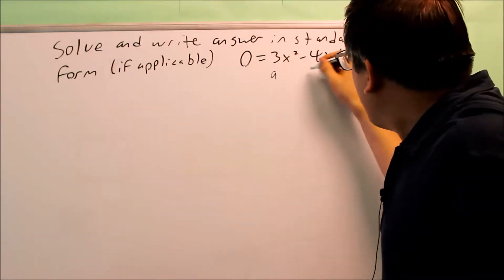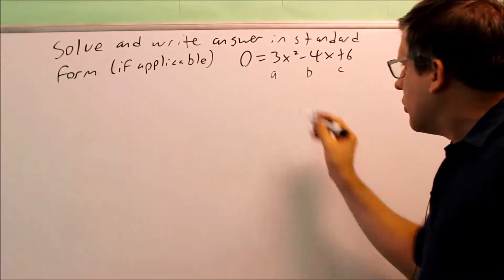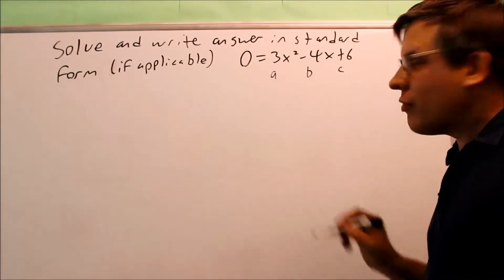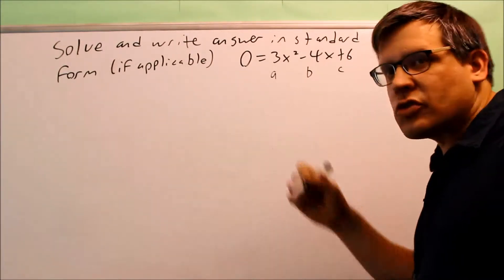So because of that, we have to use the quadratic formula. So I'm going to do that on this one. So a is 3, b is negative 4, and c is going to be 6. So now we want to put the numbers into